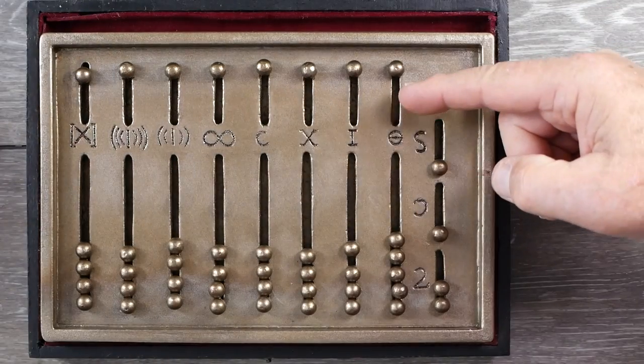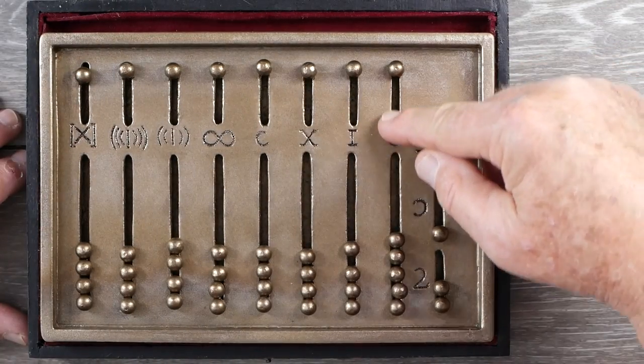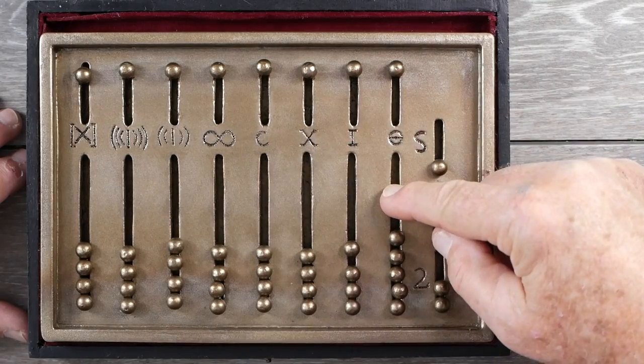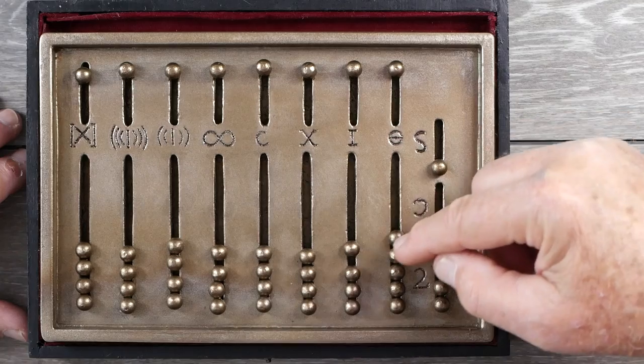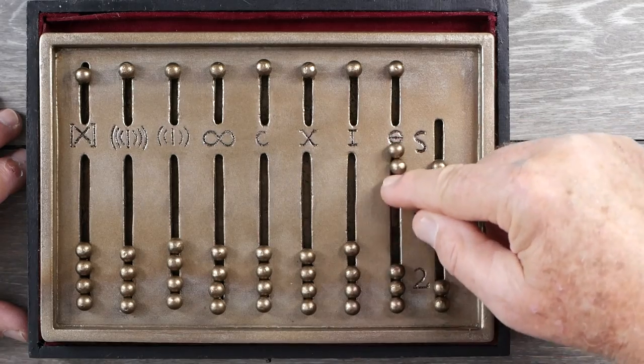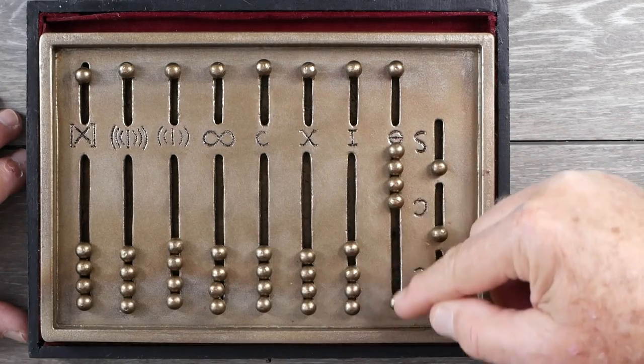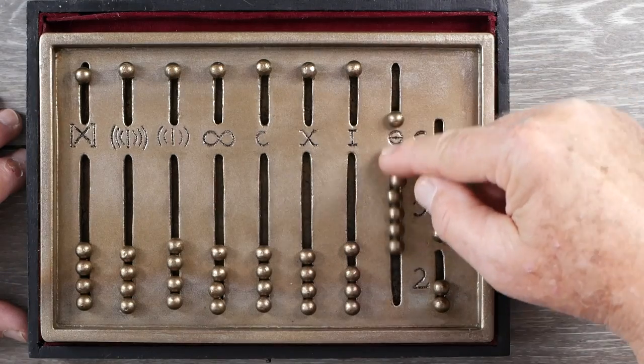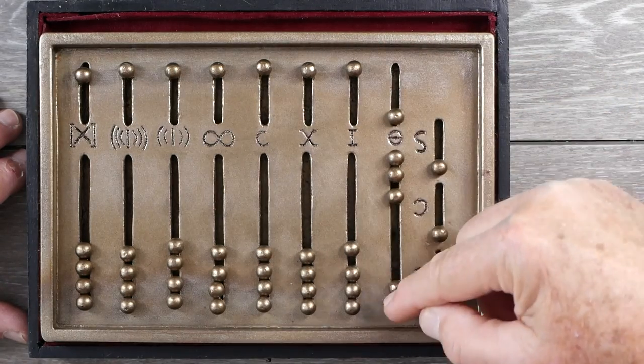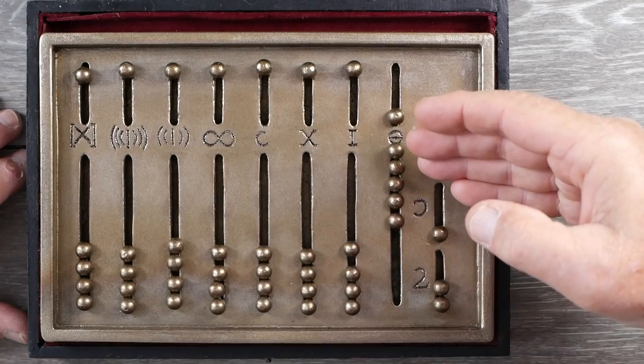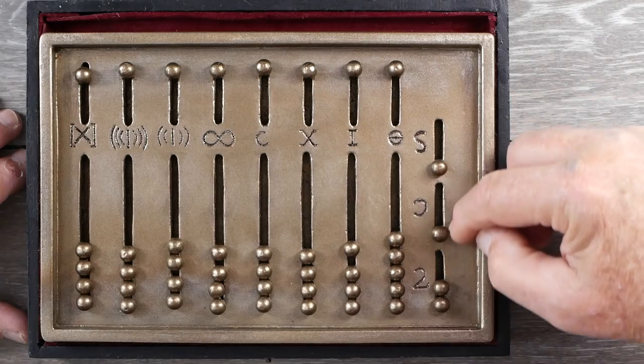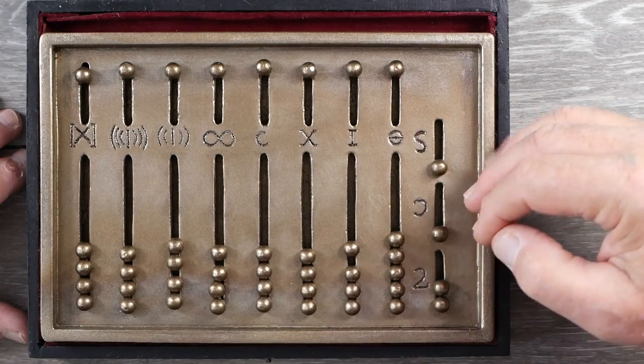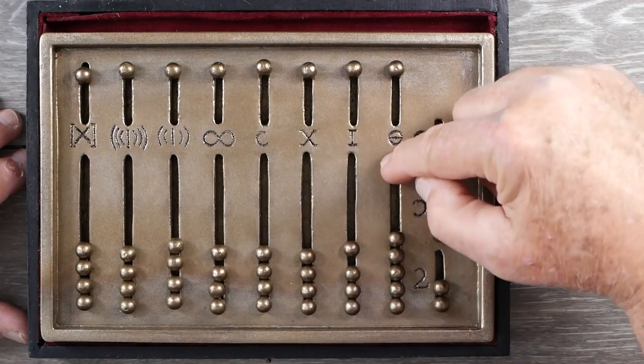Now let's talk about these two right-hand columns. This column here, the second one from the right, is in twelfths. And so that's why it has an extra bead. You count one, two, three, four, five, six, seven, eight, nine, ten, eleven. So zero through eleven. So basically it's in twelfths. And then these three short columns are twelfths of these twelfths.